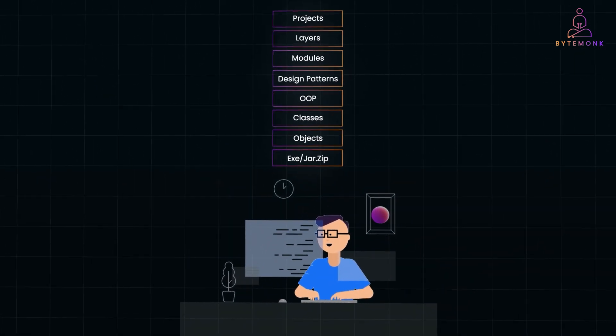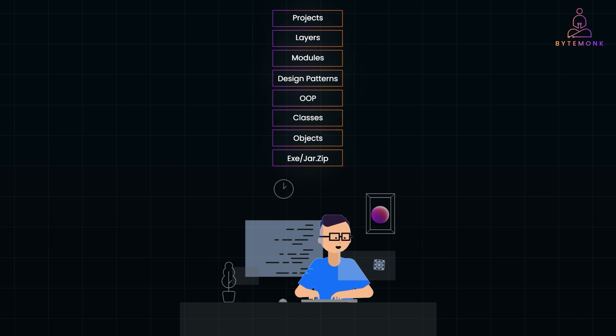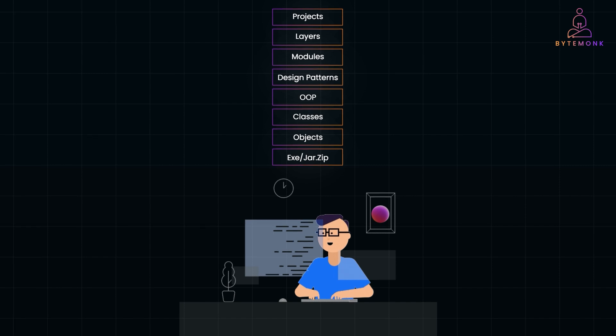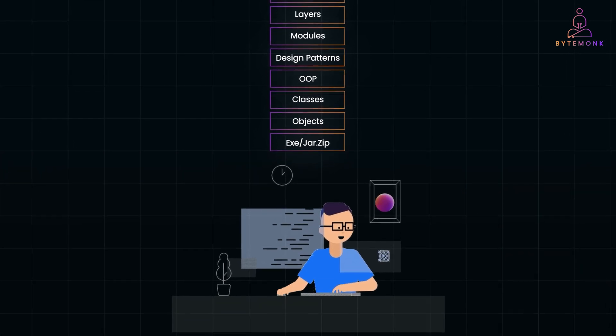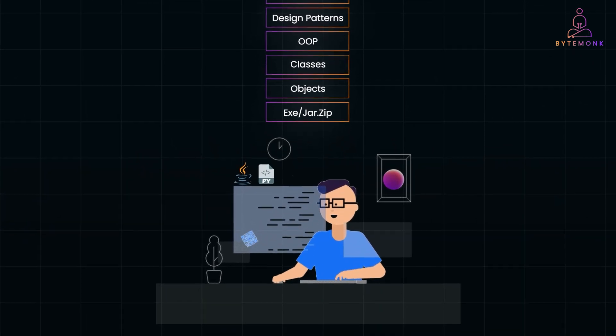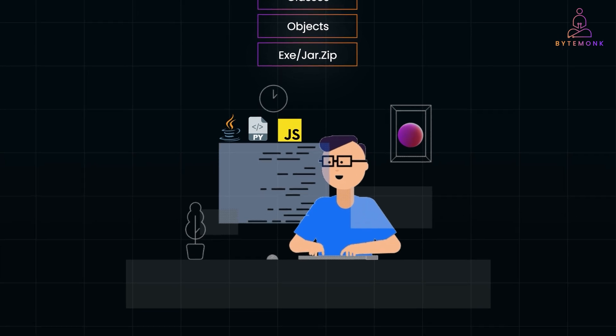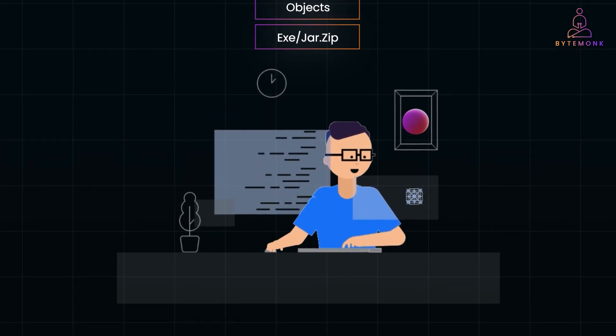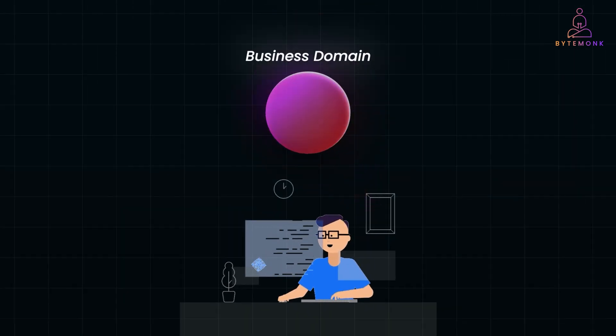Software engineering is not easy. To succeed, we are constantly learning. Whether it's picking up new languages, diving into the latest technologies, or staying on top of popular frameworks. But here is the thing. Mastering a new Java, Python, or JavaScript framework every week is not the hardest part. The real challenge is understanding and navigating new business domains. And that's where things get really interesting.